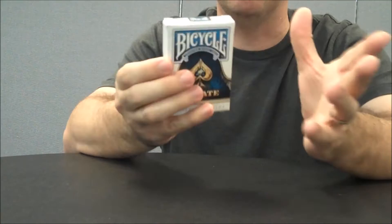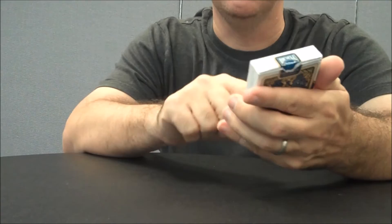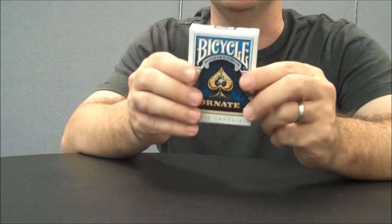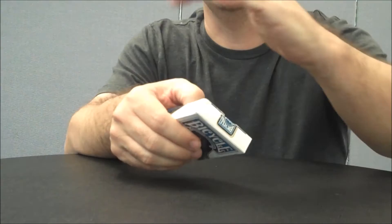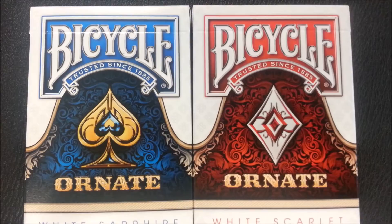The tuck on these, first of all, I have the branded version, so it's going to say Bicycle across the front. It says Trusted Since 1885, Ornate and White Sapphire. The front and back has a slight bit of embossing on it. There is a custom tuck seal, and the cool thing about this is each deck in the Limited Bicycle set shares a connective design that follows the curve of the bicycle logo, and it forms kind of like a seamless wave when all four of them are placed side by side, which I'll show you right now.